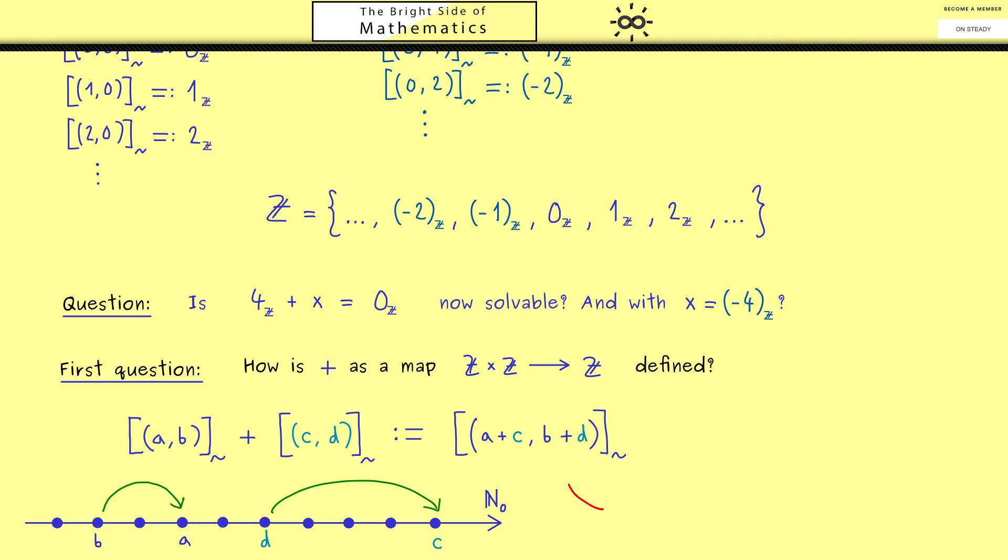With that, we have our definition of the new plus sign just by using the old plus sign inside. However, when we write something like this inside the equivalence class, we always have to show that it is well-defined. This simply means if we choose different representations for the equivalence classes on the left, this shouldn't change the result on the right. So we really want to add the boxes and not just single elements inside.